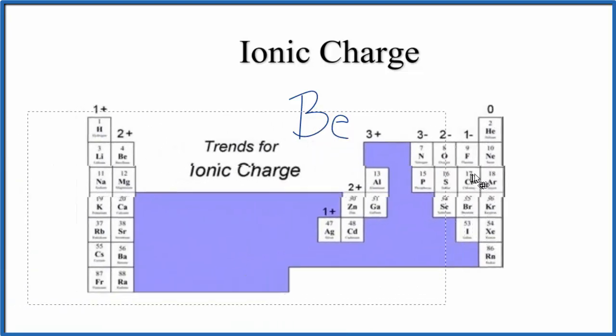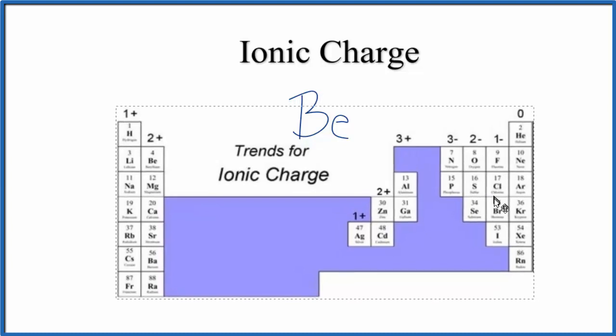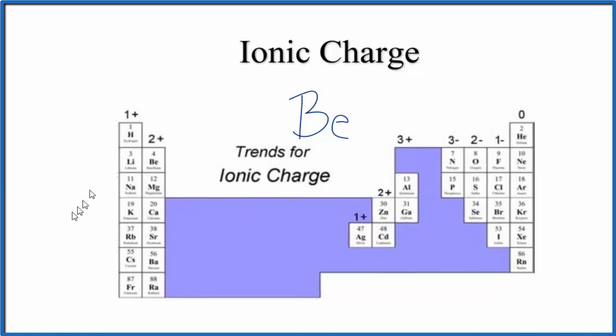Let's start out and look at the periodic table. This is a pretty quick way to find ionic charge for elements. You can see that the groups are organized by ionic charge, among other things.